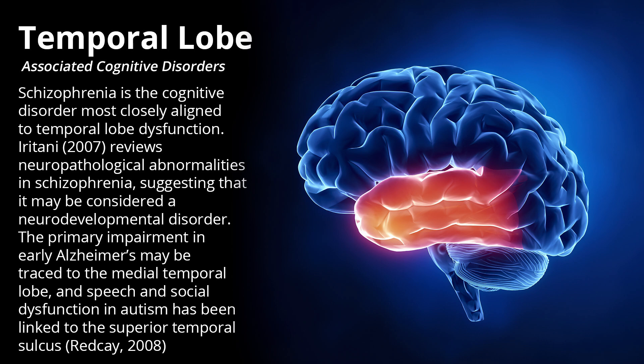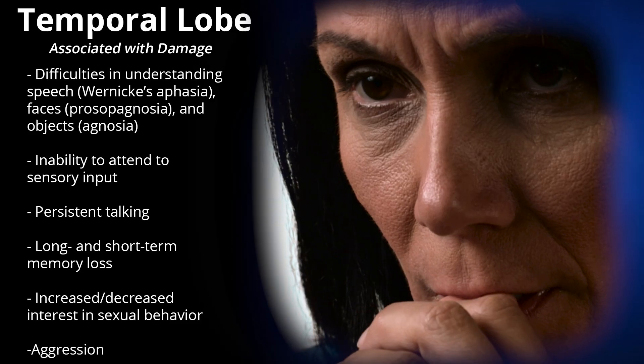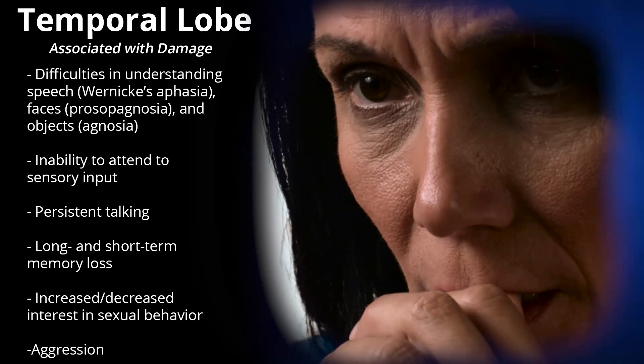The primary impairment in early Alzheimer's may be traced to the medial temporal lobe. Speech and social dysfunction in autism has been linked to the superior temporal sulcus. Conditions associated with temporal lobe damage include difficulties understanding speech, known as Wernicke's aphasia.